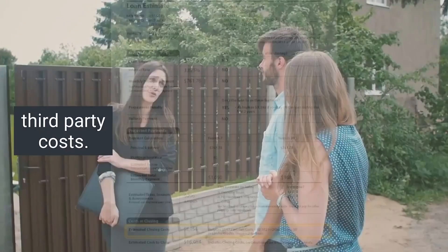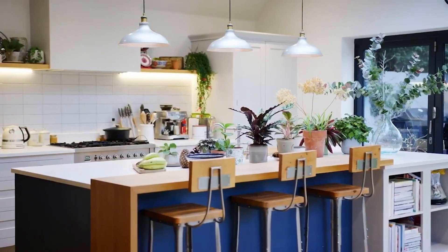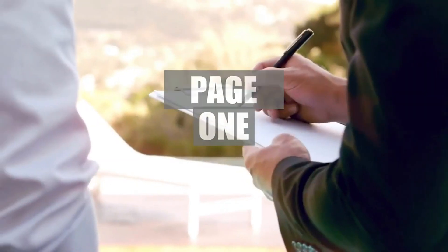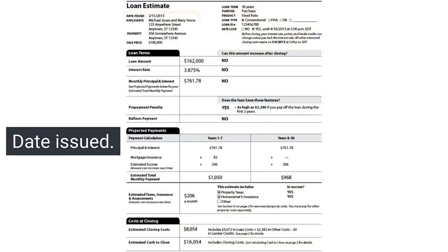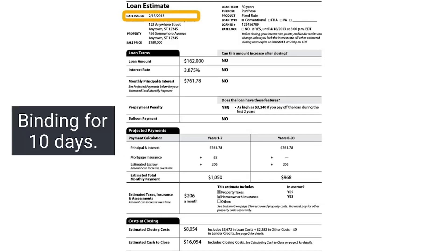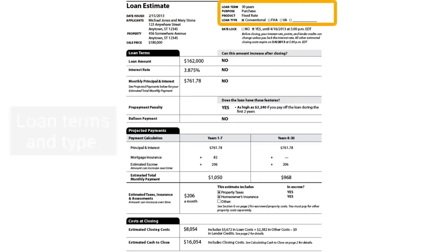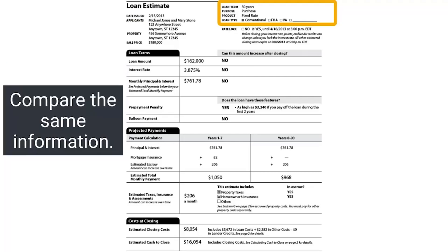While it's important to understand all the terms of your loan estimate, there are a few key sections you'll want to pay special attention to. Page 1 of the loan estimate is an overview of your loan terms and costs. You'll want to pay special attention to the date issued, since the LE is only binding to the lender for 10 days after this date. Also review loan terms and type — make sure these are the terms you wanted and that all loan estimates you compare show the same information.